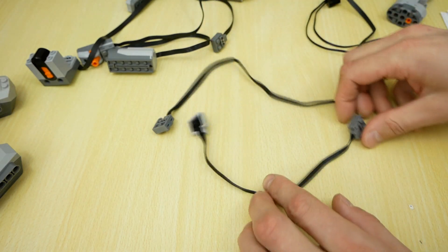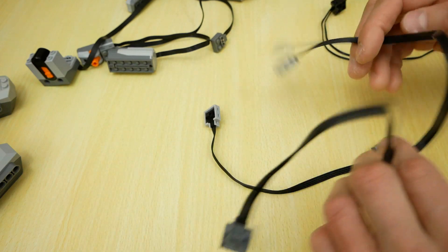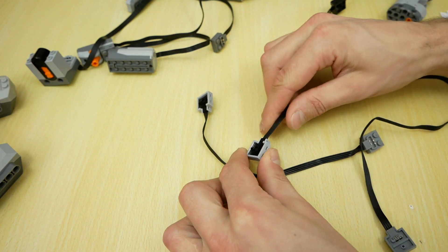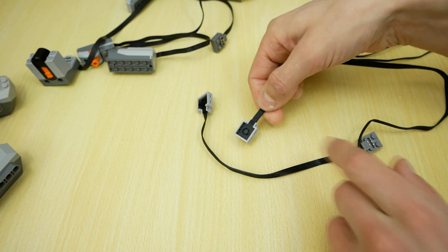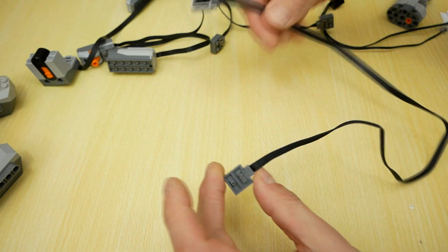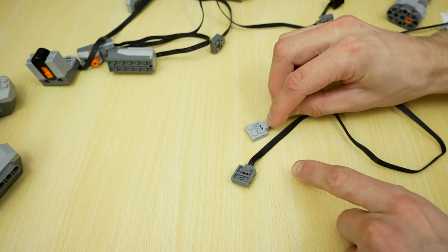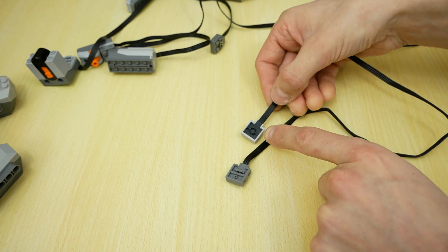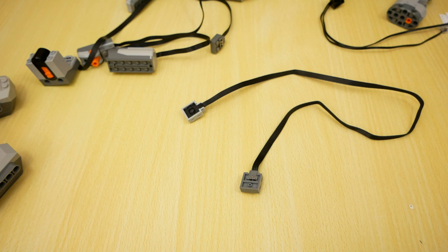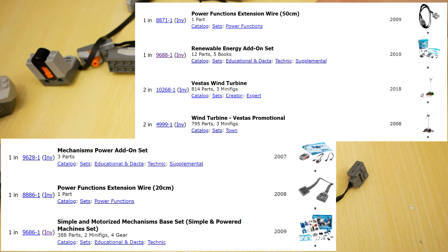Extension wires are very useful for big and very big models. And another cool feature of these wires is 9-volt adapter for old LEGO electric system. So, one connector is power function connector on both sides. And the second connector has power functions connector on the top and old 9-volt connector on the bottom. Not too many sets uses these wires. Usually, education sets and also long wires you can find in wind generator sets.